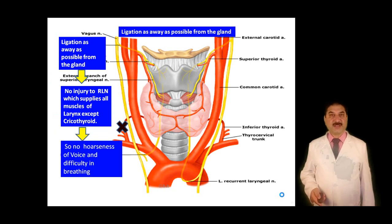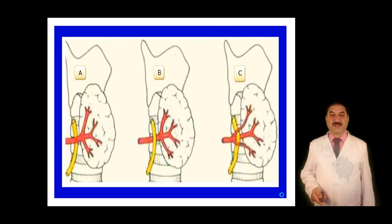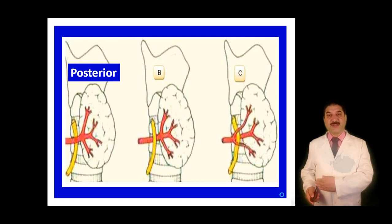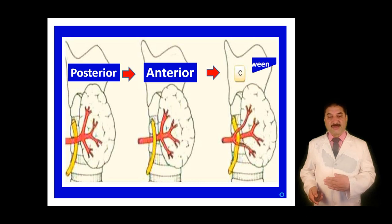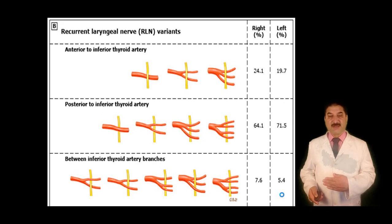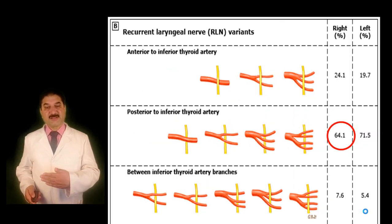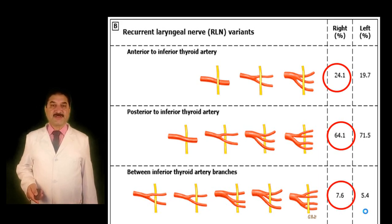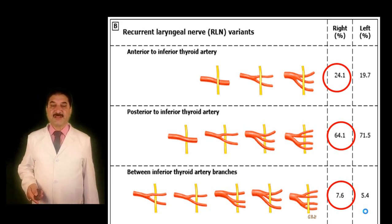Regarding the relations of the inferior thyroid artery with the recurrent laryngeal nerve: the recurrent laryngeal nerve usually passes posterior to the inferior thyroid artery, or it may pass anterior to it, or between its branches. In 64% of cases it passes posterior to the main trunk or branches of the inferior thyroid artery. In 7.6% of cases it passes between the terminal branches. So the posterior position is the commonest presentation.